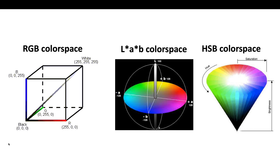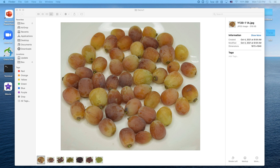Beyond the RGB color space, there are also other ways to define color in images, such as the LAB color space or the HSB color space. Similarly to RGB, you have three channels coming together to mathematically define the color in each pixel. In this process I'm going to share today, we'll analyze color in our grape images using these multiple color spaces.